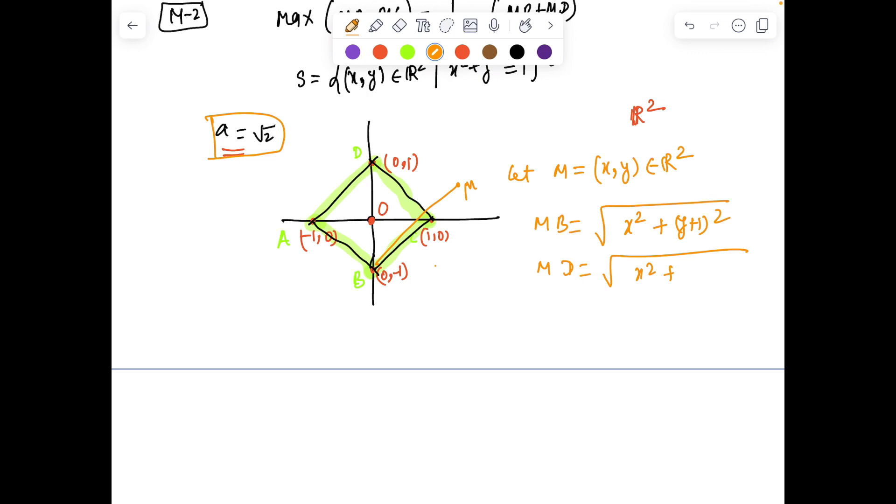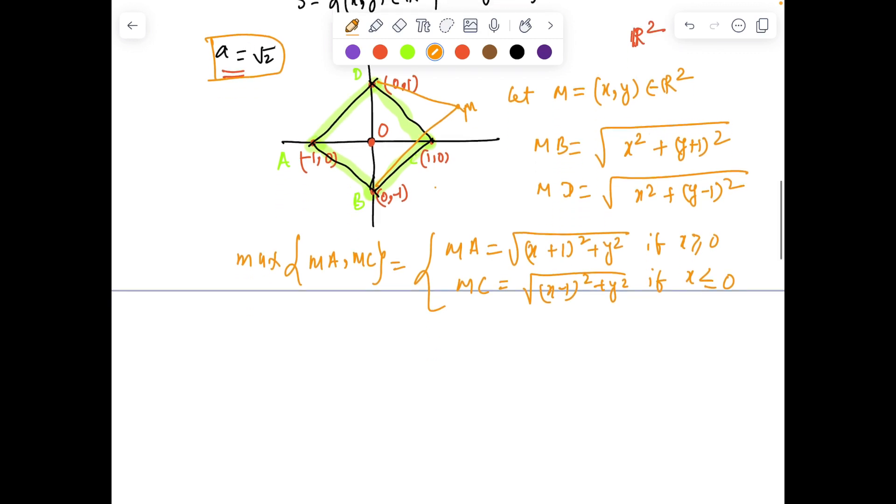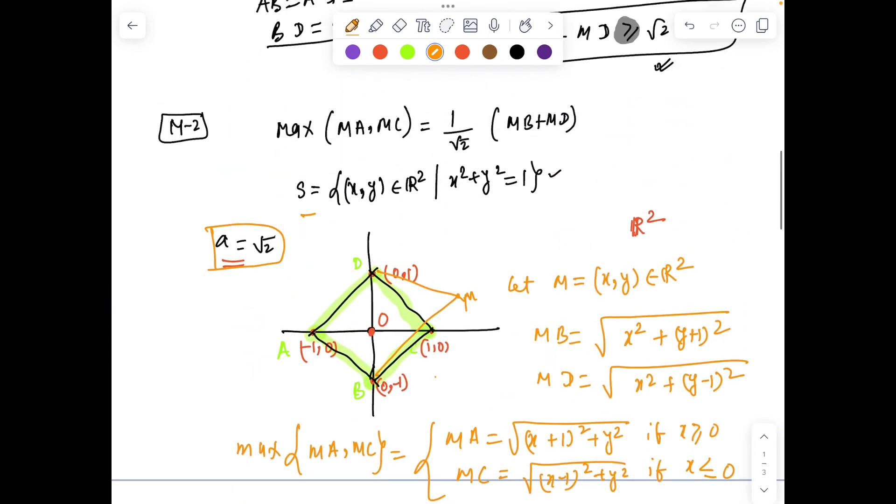MD is √(x² + (y-1)²). And max of MA, MC will be MA if x is positive, so let me call it √((x+1)² + y²) if x is positive, and it is MC if √((x-1)² + y²) if x is negative.